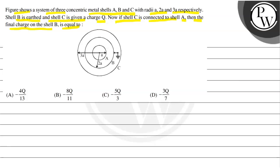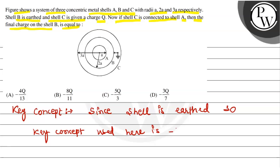We have to choose the correct option. Now, first of all, let's discuss the key concept. Since shell is earthed, so key concept used here is potential is zero for grounded shell.